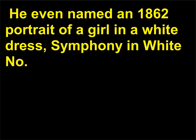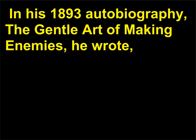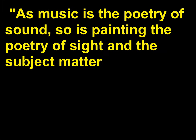Whistler was interested in the idea of art as a visual music — he even named an 1862 portrait of a girl in a white dress Symphony in White No. 1, to emphasize the musicality of his work. In his 1893 autobiography The Gentle Art of Making Enemies, he wrote: 'As music is the poetry of sound, so is painting the poetry of sight, and the subject matter has nothing to do with harmony of sound or of color.'